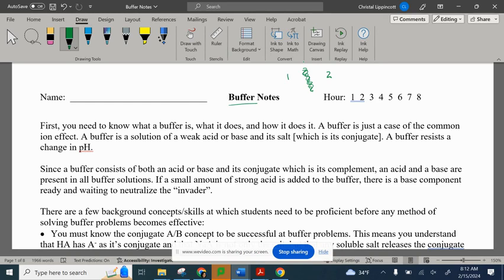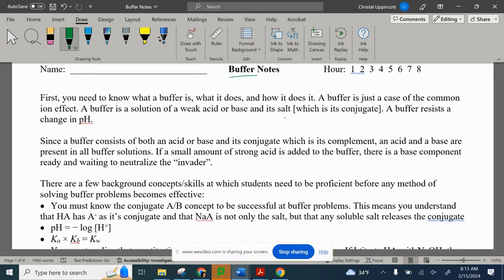It resists change. So, when your computer is buffering, it's resisting change that you want to actually happen, usually because you've run out of memory or something. But a buffer is something that's going to resist change, and that's what we're going to do here, is we're going to resist stark changes in our pH. And we're going to do it by using typically an acid and its conjugate base. A buffer is a solution of a weak acid or a weak base and its salt. Essentially, it's conjugate.